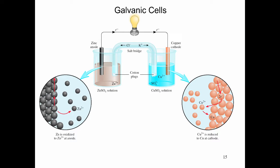Let's move on to the discussion on galvanic cells. A galvanic cell is basically an electrochemical cell where you have a spontaneous redox reaction occurring. In here, you have two beakers — on one beaker you have the oxidation, and on the other side is the reduction. This is a reaction where the reactants are separated: the one that undergoes oxidation is in a different location than the one that undergoes reduction.